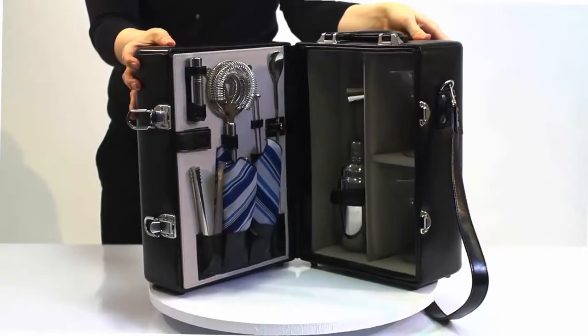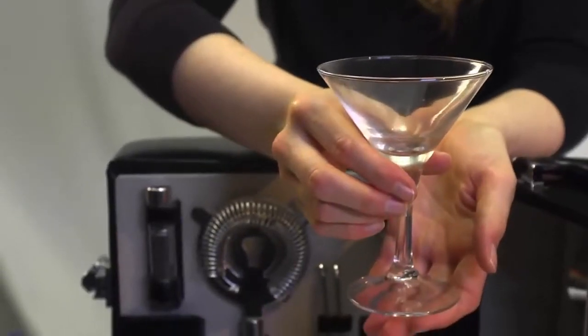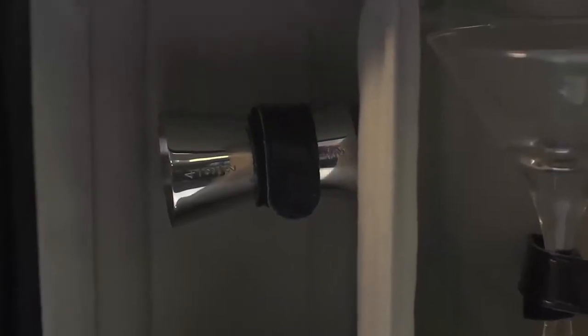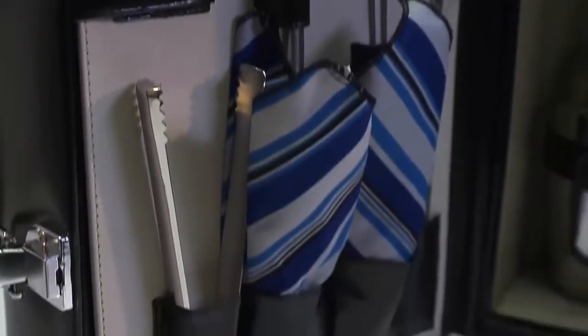It includes hand-blown martini glasses, shaker, double-sided jigger, ice tongs, strainer, stainless steel olive picks, a mister, and combination fork and spoon stirrer.